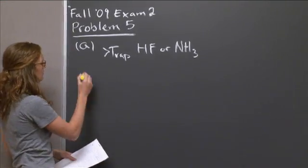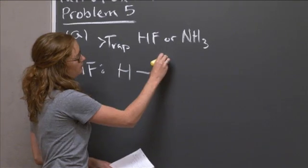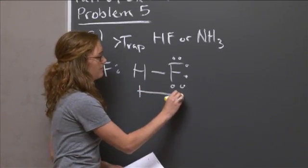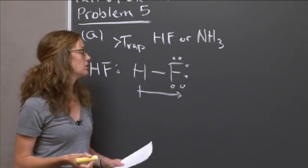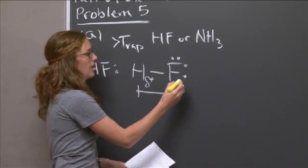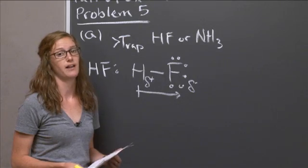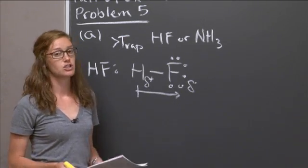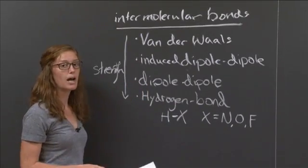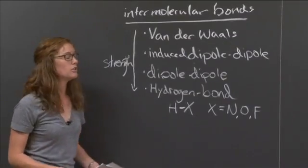Starting with HF, we have hydrogen bonded to fluorine. We know that fluorine has a much higher electronegativity than hydrogen, so we're going to have a polarized bond and a net dipole towards fluorine. This causes there to be a partial positive charge on the hydrogen and a partial negative charge on the fluorine. What is our strongest intermolecular bond for HF? We have a dipole, so we might first think dipole-dipole — however, we need to remember about hydrogen bonds. In HF, we have hydrogen bonded to fluorine, so hydrogen bonding will be our strongest interaction.